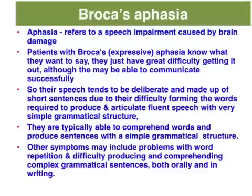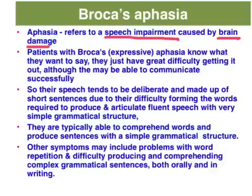A good way of developing a better understanding of the differences between Broca's area and Wernicke's area is to look at what happens when we develop aphasia in either area. Aphasia refers to a speech impairment caused by brain damage. Victims of Broca's or expressive aphasia know what they want to say, they just have great difficulty communicating it. Their speech tends to be very slow and deliberate because of the difficulty they have forming the words required to produce clear and fluent speech.